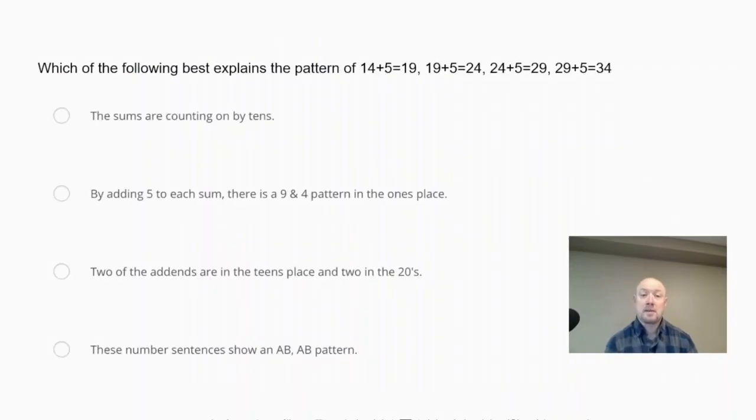Which of the following best explains the patterns of 14 plus 5 equals 19, 19 plus 5 equals 24, 24 plus 5 equals 29, and 29 plus 5 equals 34? So when we look at this, this is really an arithmetic sequence that we're adding 5 to get the next term in the sequence.